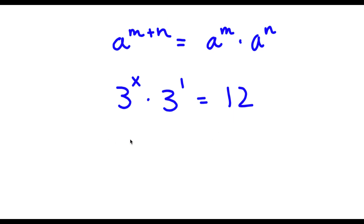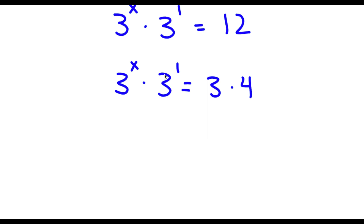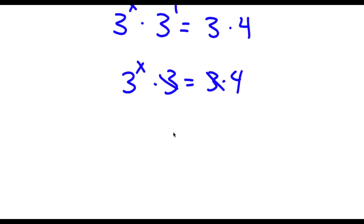Now 12 is the same thing as 3 times 4. So I have 3^x times 3^1 is equal to 3 times 4. Now 3^1 equals 3, so these two 3s can simply cancel out, and I'm left with 3^x is equal to 4.